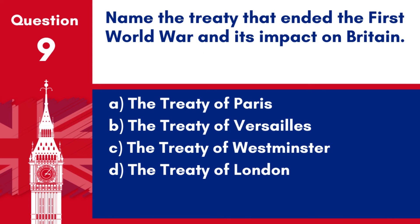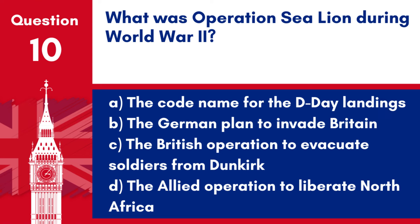Question 9. Name the treaty that ended the First World War and its impact on Britain. a. The Treaty of Paris. b. The Treaty of Versailles. c. The Treaty of Westminster. d. The Treaty of London. Answer: b. The Treaty of Versailles ended the First World War and had a significant impact on Britain, including territorial gains and reparations, but also contributing to the conditions leading to World War II.